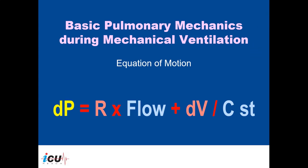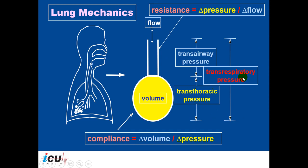In order to fully understand mechanical ventilation, you need to understand the equation of motion. The respiratory system has essentially two components. The first is the artificial and conductive airways, and in order to get the air through the airways, you need to overcome the airway resistance. This airway resistance is equivalent to the change of pressure divided by the change of flow.